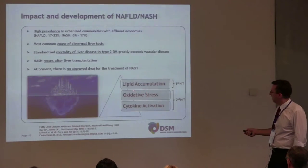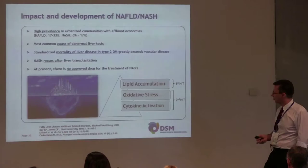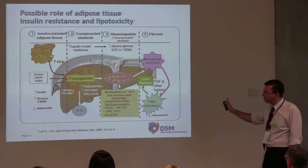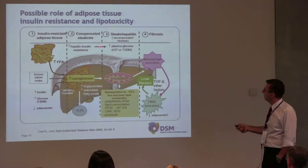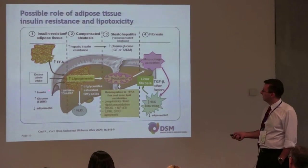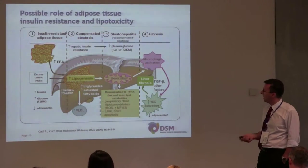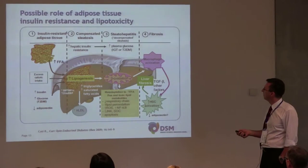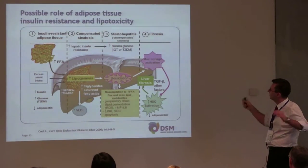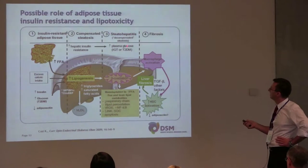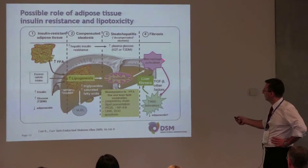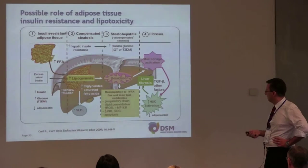There is a theory that the disease starts with a first hit of lipid accumulation, and then oxidative stress and cytokine activation — the inflammation process — begins. Everything starts with excessive calorie intake, increased free fatty acids in fatty tissue, increased lipogenesis, and hepatic insulin resistance in the liver. This can progress from compensated steatosis into decompensated steatohepatitis, where mitochondrial beta-oxidation and reactive oxygen species production are much increased — a clear pathway into fibrosis and cirrhosis.